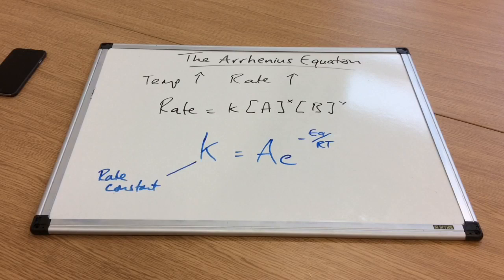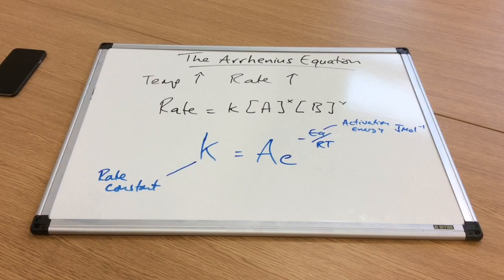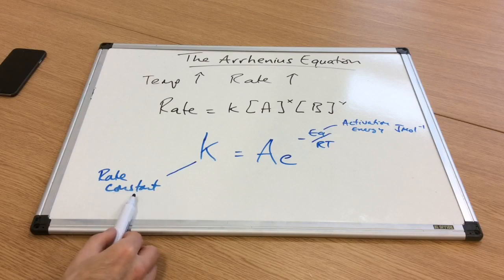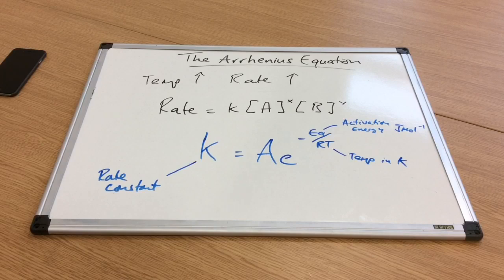K is the rate constant. EA is the activation energy, and the units of that are joules per mole. The units for rate constants can vary, so I haven't specified the units here. T is the temperature, but that must be in Kelvin.